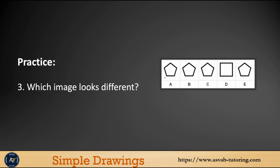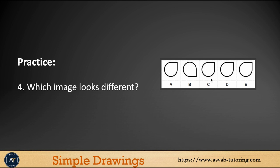The next one — you could see all of them are pentagons. There is only one figure that is different, so that would be the correct answer. For the following one, all of them are dumbbell shapes pointing toward the upper right corner, except one which points toward the lower right corner. So the correct answer is B.